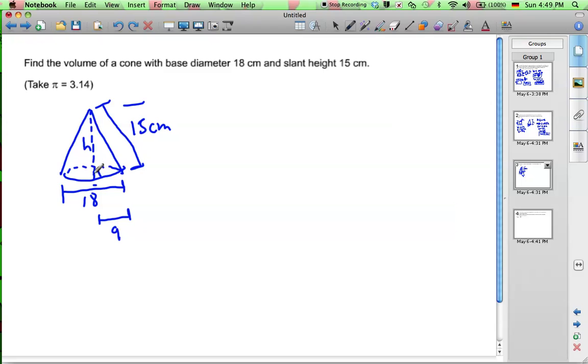So if you look in here, we're going to have a right triangle. We're going to have a right triangle with the slant height as the hypotenuse. And the height is over here, and this leg is 9 centimeters.